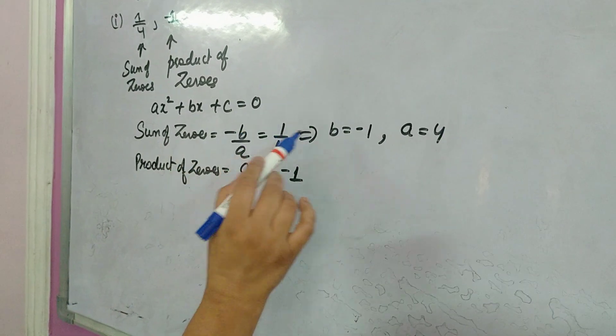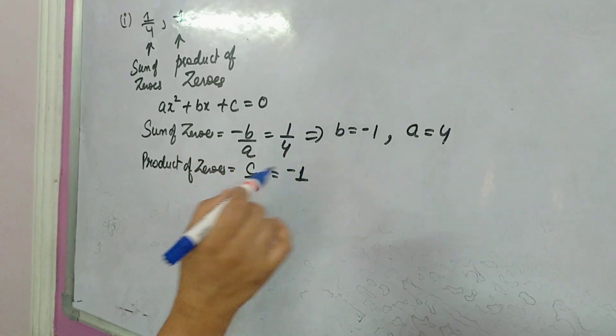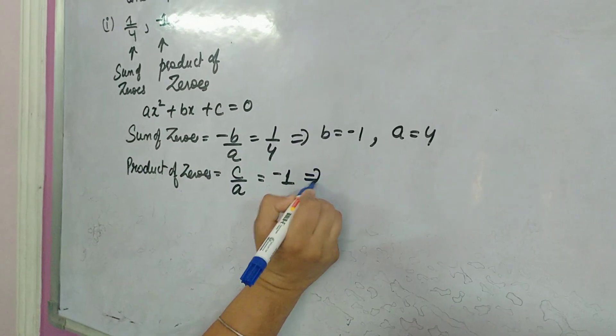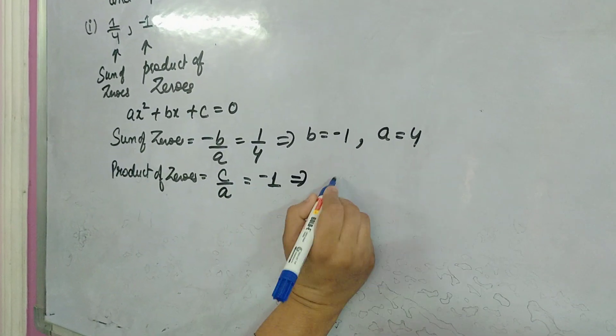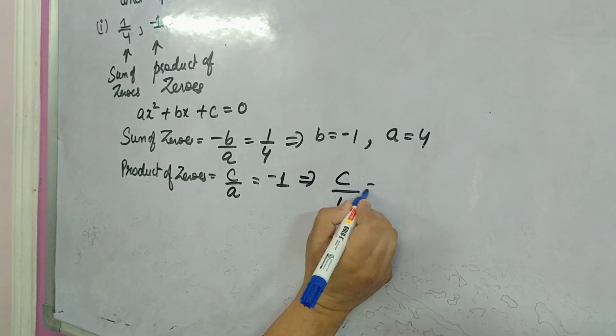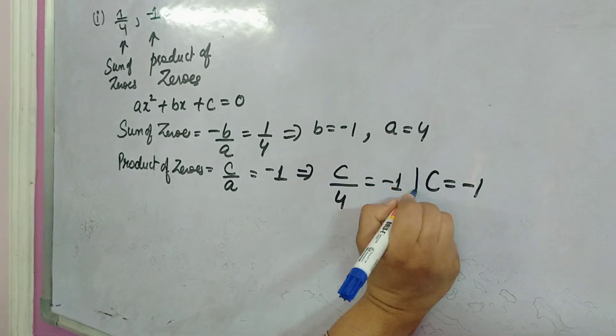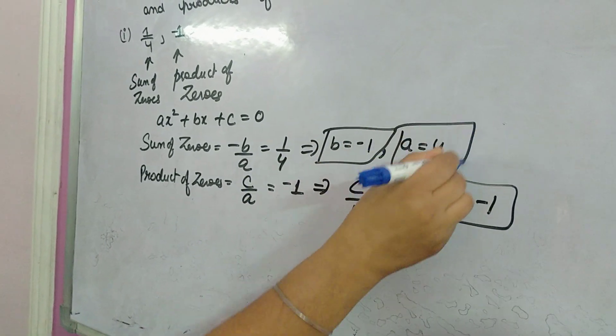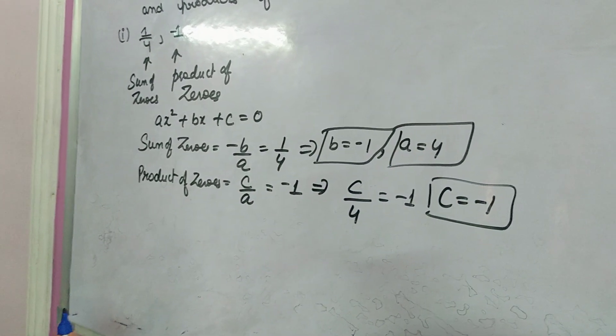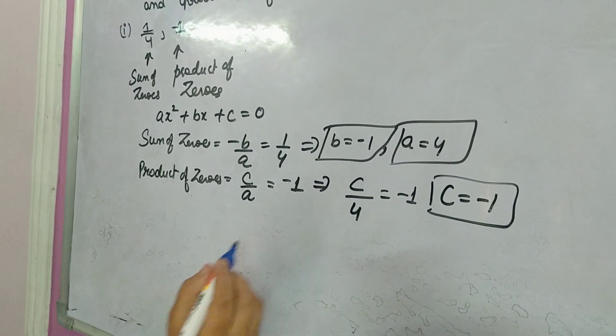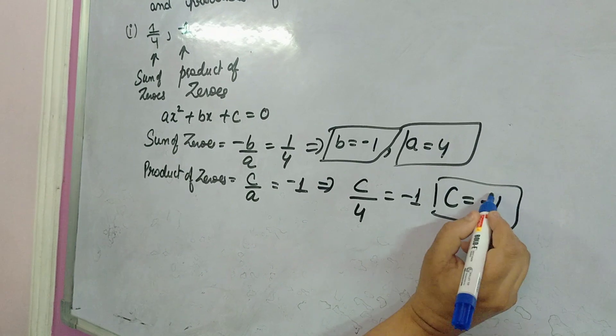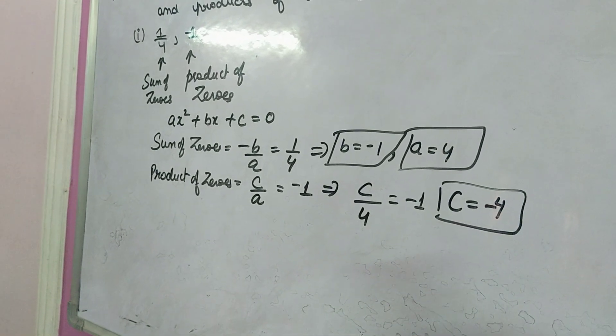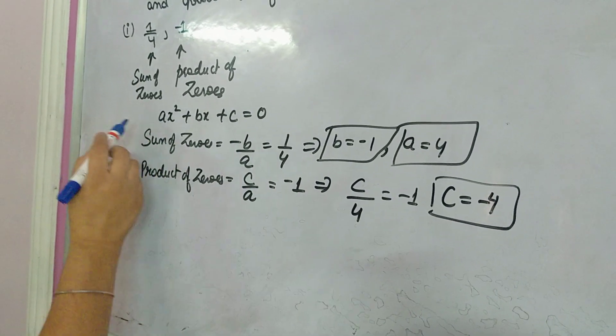B is minus 1, a is 4. From c over a equals minus 1, with a equals 4, we get c equals minus 4.